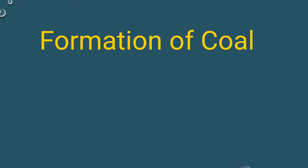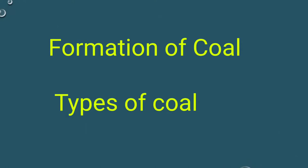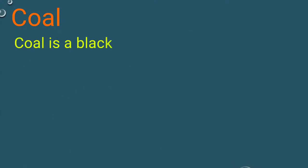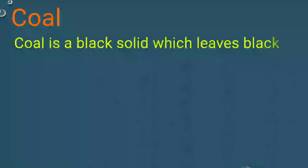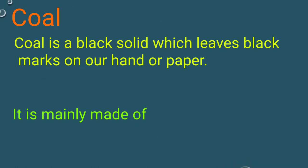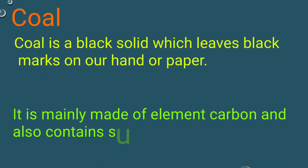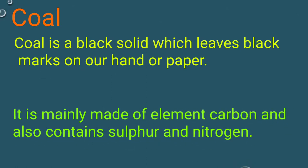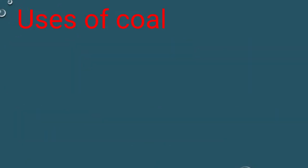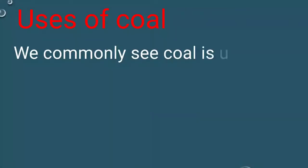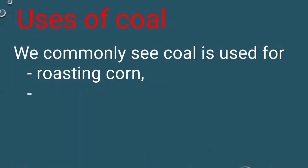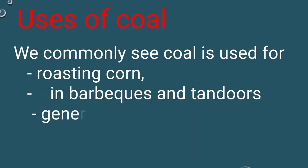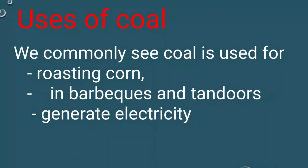Hello friends, welcome to my channel. In this video we discuss formation of coal and types of coal. Coal is a black solid which leaves a black mark on our hands or paper. It is mainly made of carbon and also contains sulfur and nitrogen. Coal is commonly used for roasting corn in barbecues and tandoors, and to generate electricity.